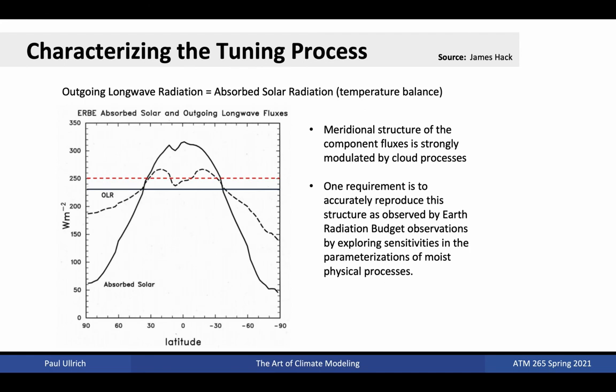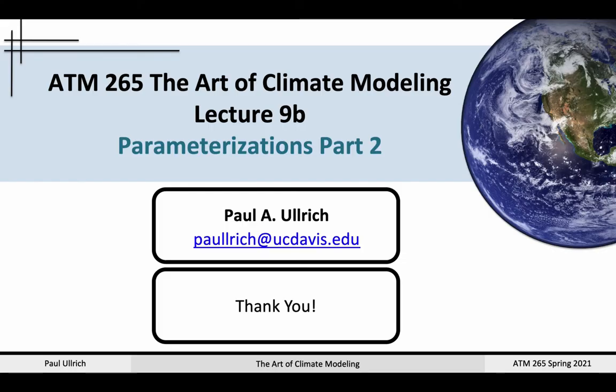To limit the human involvement in the tuning process and ensure the model is physically grounded, it's common to limit the number of variables tuned. As a consequence, the most common strategy for tuning simply focuses on ensuring the model's outgoing long-wave radiation is matched by the absorbed solar radiation. This means that when the model is run under a stationary climate such as pre-industrial, there are no significant drifts in the average global temperatures. If tuned in this manner, we can be confident that the model is able to maintain a stable climate state given constant background forcing. The plot here shows zonal mean solar and outgoing radiation as a function of latitude. Given that radiative balance is heavily modulated by moist processes and cloud fraction, this is a natural context to target for our tuning.